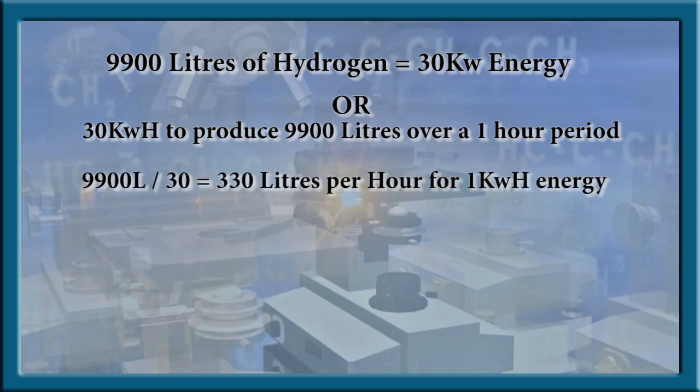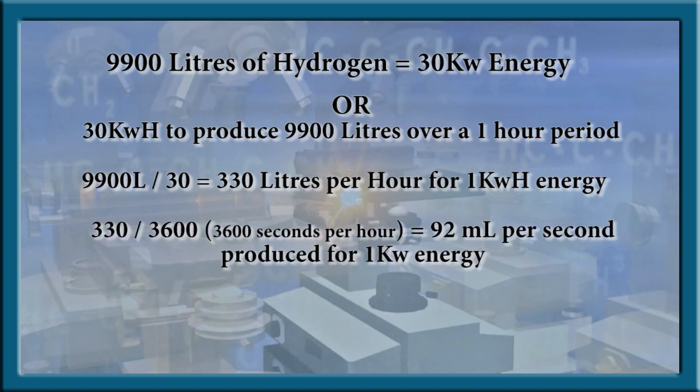Therefore, divide 9,900 by 30 and we conclude that 1 kilowatt-hour of input energy would produce 330 liters over that 1 hour of constant run time. Divide the 330 liters produced per hour into quantity per second and we arrive at 92 milliliters of hydrogen produced per second from a constant 1 kilowatt input energy and a 100 percent efficiency.